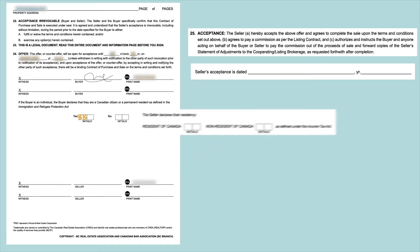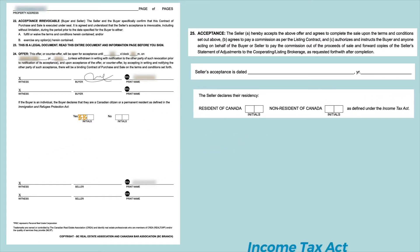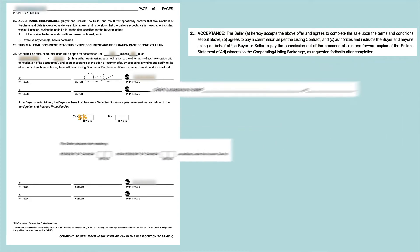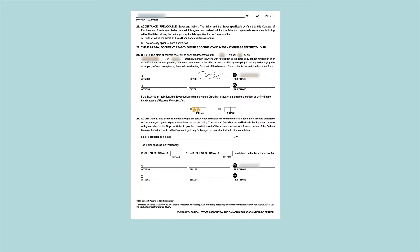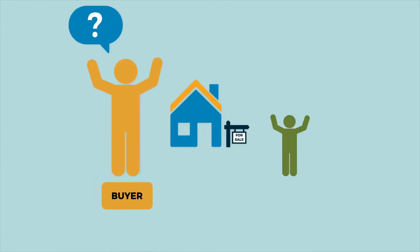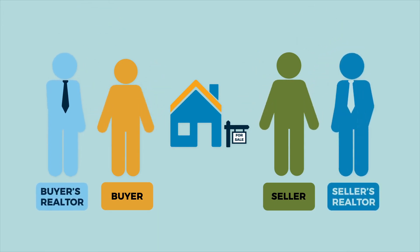The seller must also specify their residency status under the Income Tax Act by initialing the appropriate box. Residency status information is important for determining whether certain withholdings and remittances need to be made by the buyer on closing if the seller is a non-resident of Canada. With such a significant financial commitment, it's important to ensure that everything is fully understood and laid out before signing the contract of purchase and sale. If you have any additional questions, contact your Realtor. Realtors are here to help.